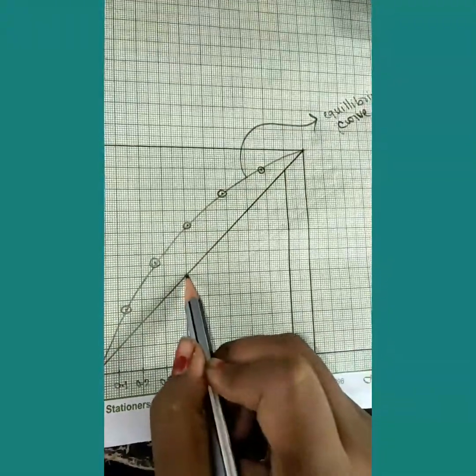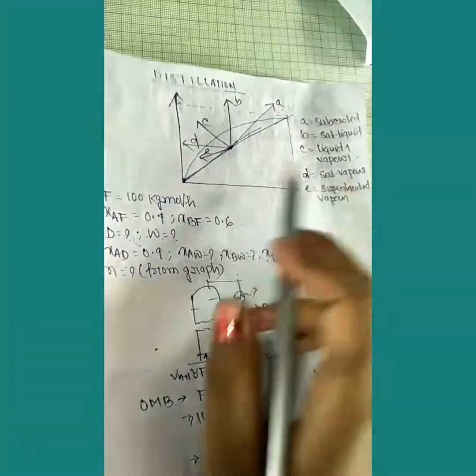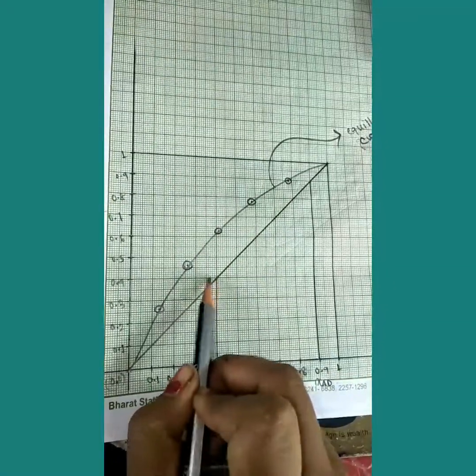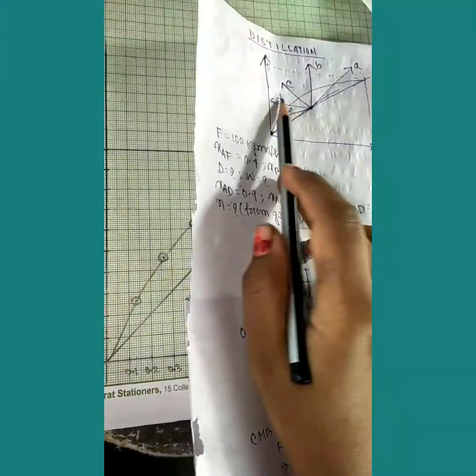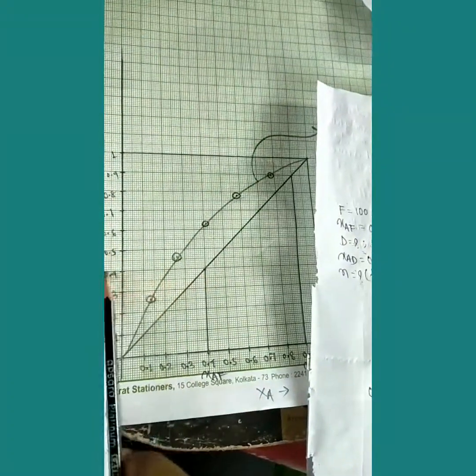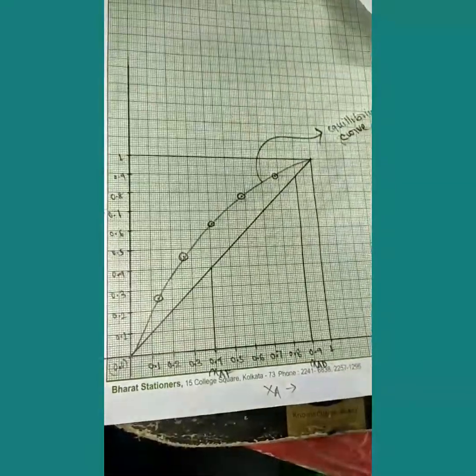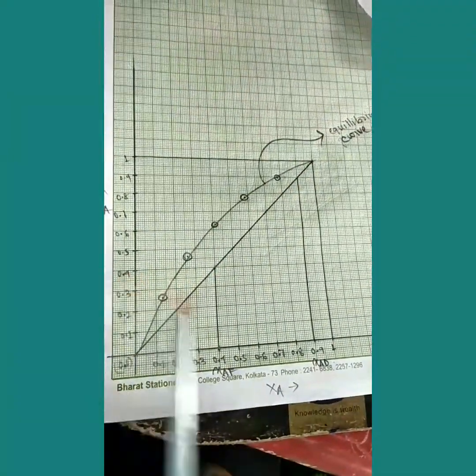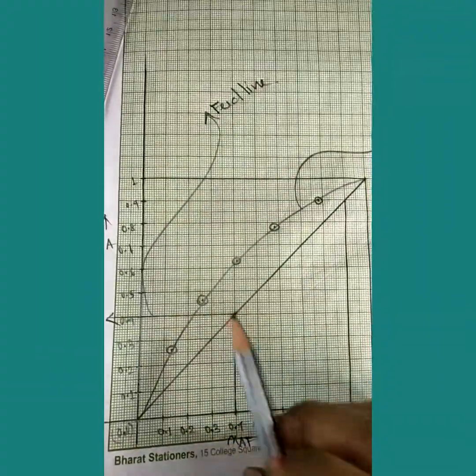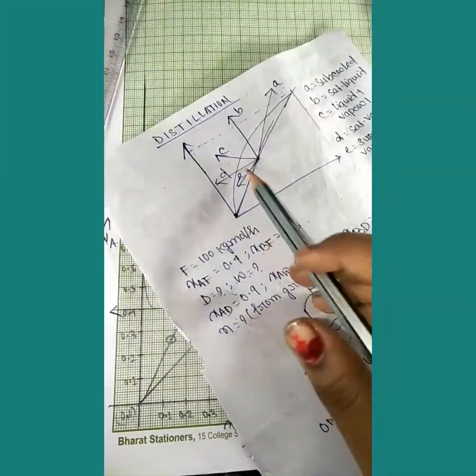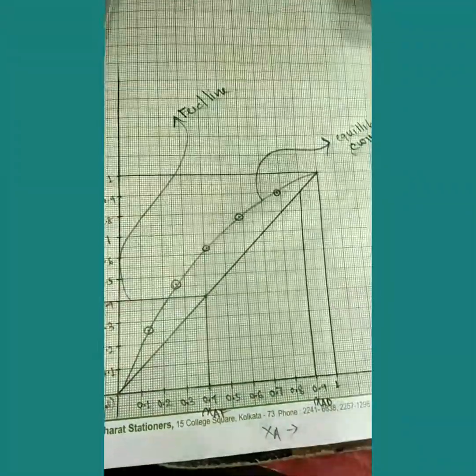Since the feed is saturated vapor, the feed line will be vertical at xf equals 0.4. I'll draw this feed line according to 0.4 on the x-axis. This is the feed line for saturated vapor condition. Now I'll draw the feed line in the left side according to this 0.4 xa value.